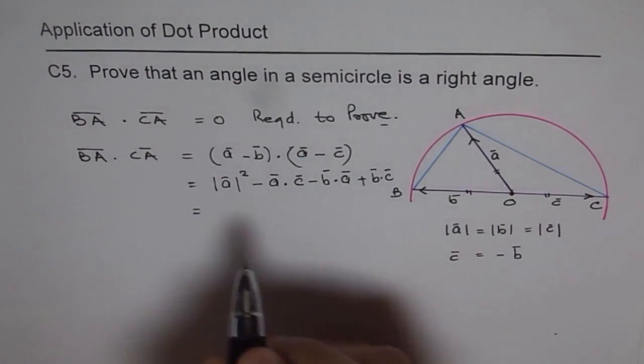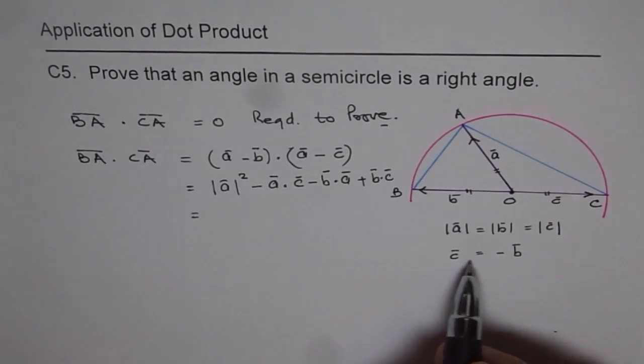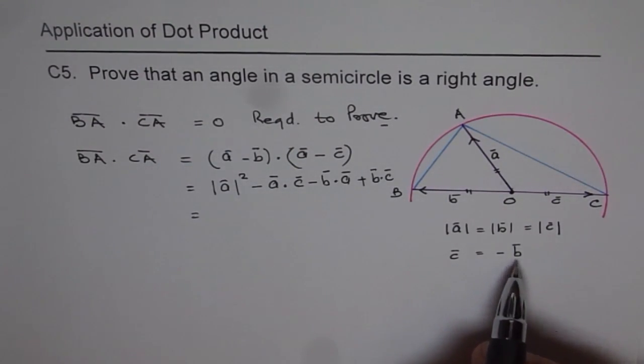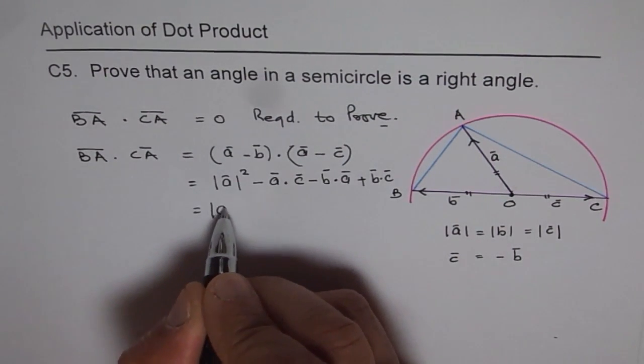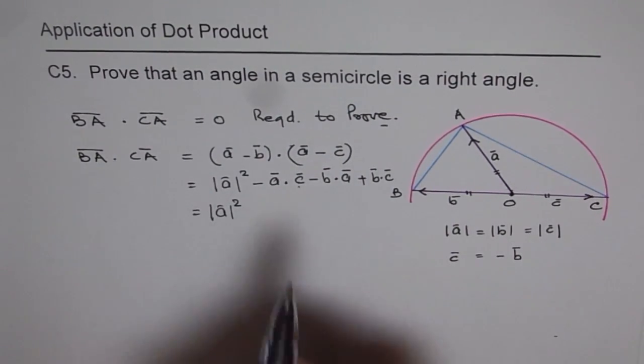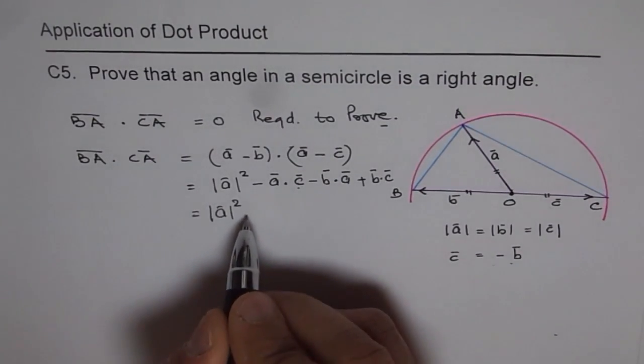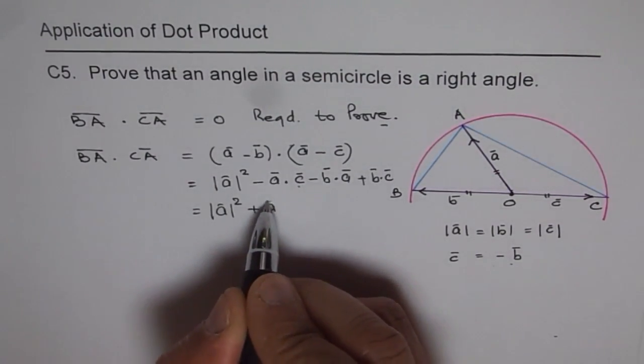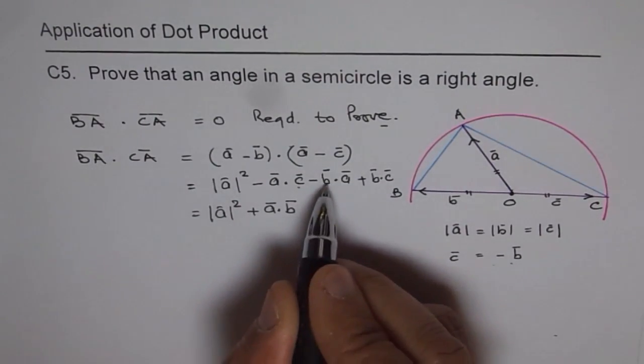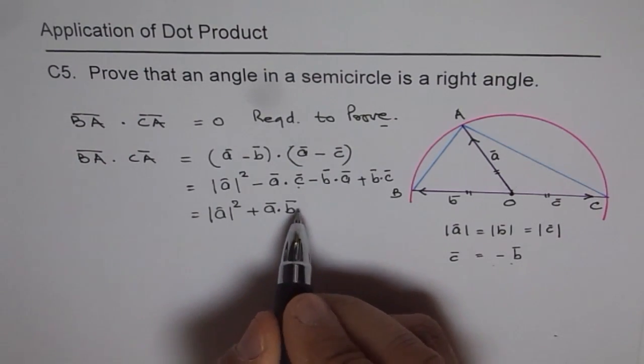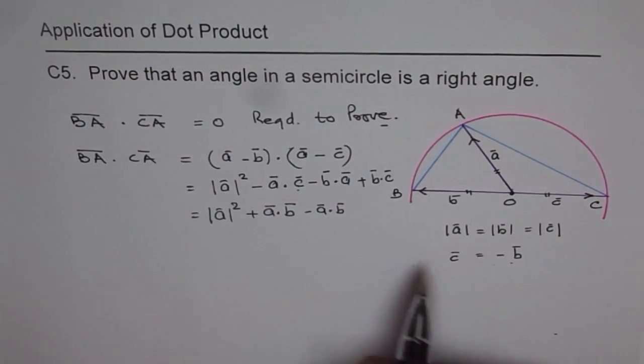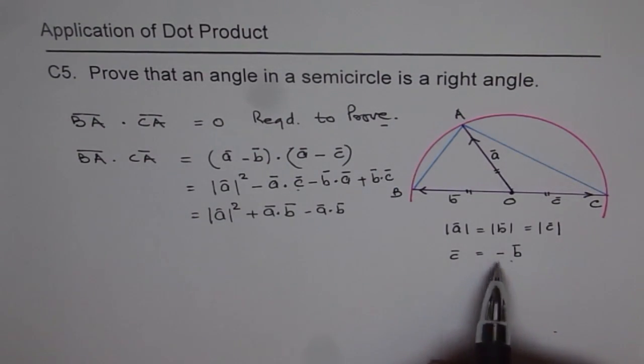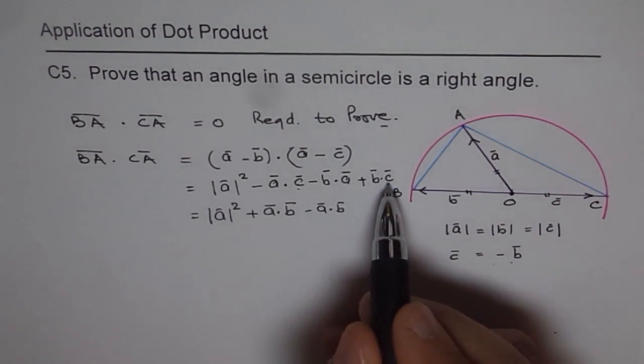And now let's see what can we use. C is equals to minus of B. So instead of C, I can write minus B. So in that case, if I write minus B, then this becomes magnitude of A square. And I'm replacing C with minus B. So this becomes plus vector A dot vector B. And here I will apply commutative property. So I get vector A dot vector B minus of that.